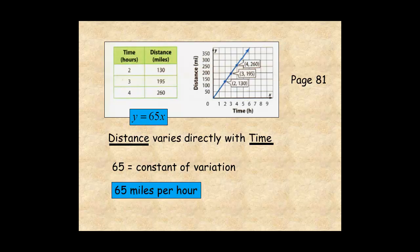The graph of the direct variation is a line that passes through the origin, with the slope equal to 65.